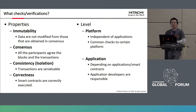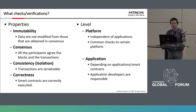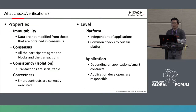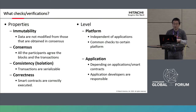What kind of properties need to be checked? Immutability — meaning data are not modified from what was obtained in consensus. Consensus — all participants agree on the blocks and transactions. Consistency — all transactions are serializable. And correctness — the smart contract is correctly executed.